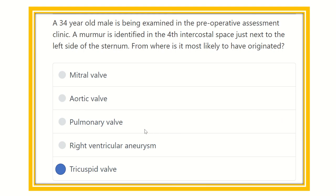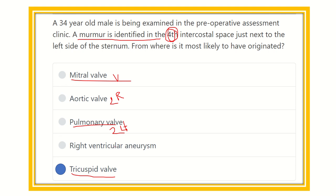Now we can identify the answer. The murmur is at the fourth intercostal space on the left side of the sternum — this corresponds to the auscultatory area of the tricuspid valve. The mitral valve is at the fifth intercostal space; the aortic valve is at the second intercostal space on the right; the pulmonary valve is also at the second intercostal space on the left; and right ventricular aneurysm is not related to the fourth intercostal space. Therefore, the answer is the tricuspid valve.